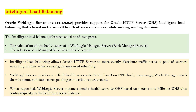These parameters define the performance of your application servers. Your managed server calculates the health of each parameter and coordinates with OHS with all these parameter values. Based on those values, OHS decides which application server to send the request to. When requested, the WebLogic server instance sends a health score to OHS based on metrics and MBeans, and OHS then routes the request to the healthiest server instance.